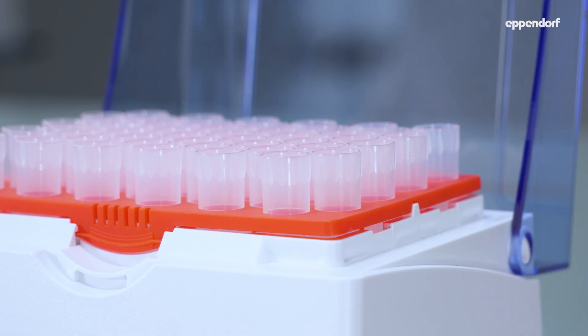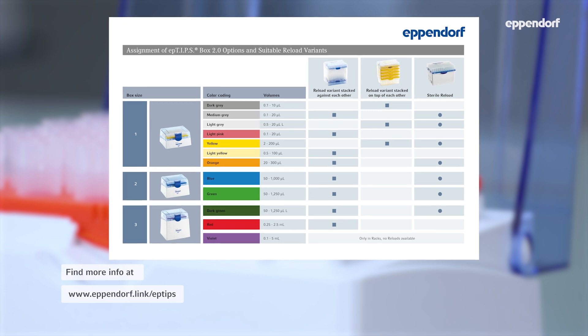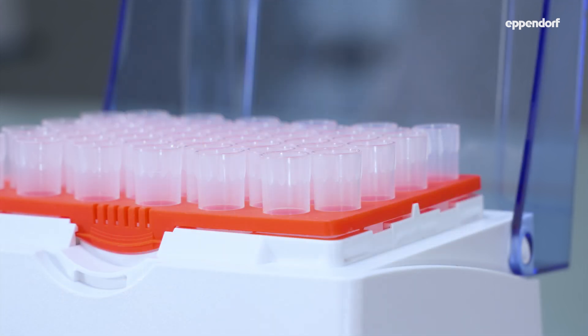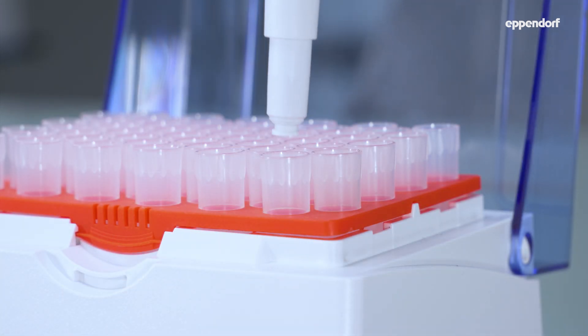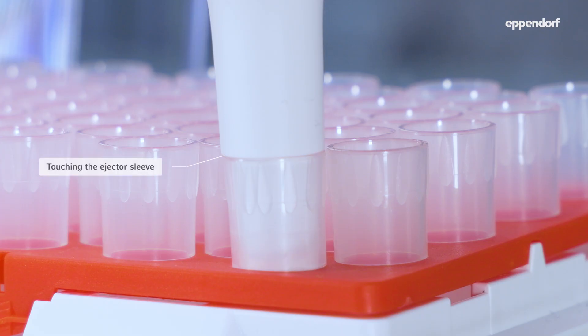Attach a suitable pipette tip. The color code on Eppendorf tip trays helps you to easily identify matching tips for your pipette. Push the pipette onto the tip. Avoid hammering the tip in or rocking the pipette. The tip is securely attached when its upper end touches the ejector sleeve.